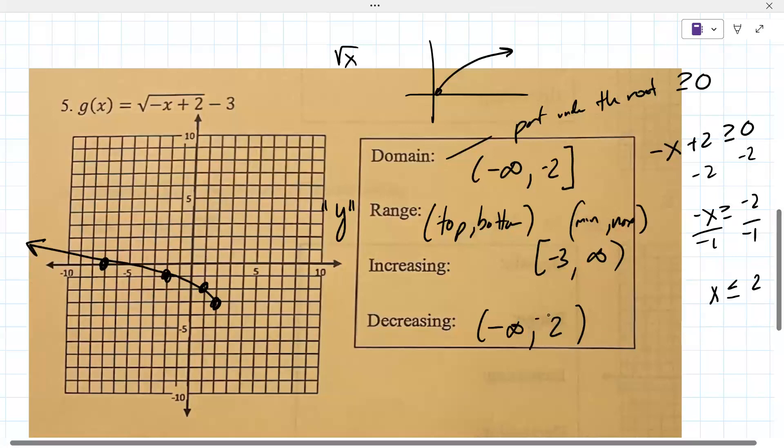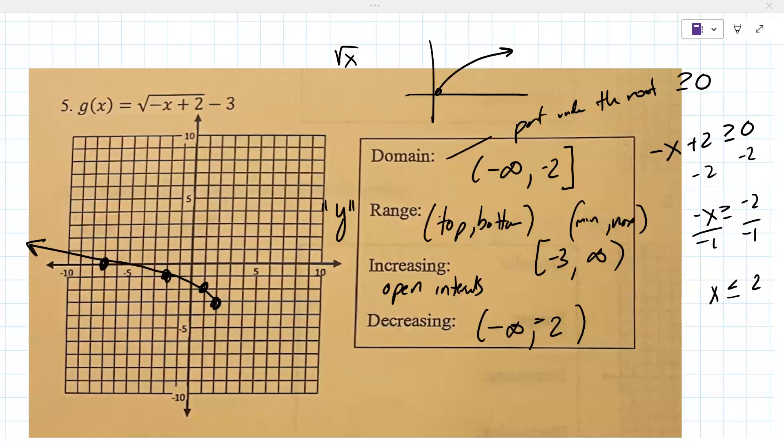The reason it's parentheses, this is like a small thing, increasing and decreasing are always what are called open intervals. So they never include brackets. That's just kind of like a small side point. And that one's similar to number six, right? Unfortunately, it's a cube root, so it's completely different. That's what I was trying to say, these are all different.